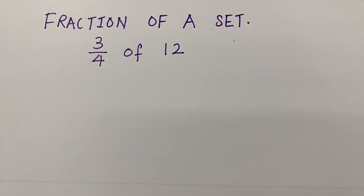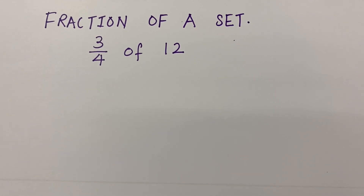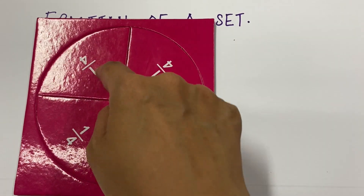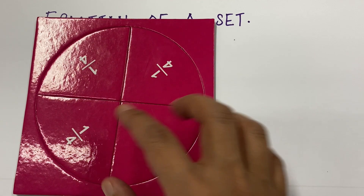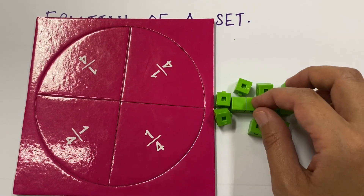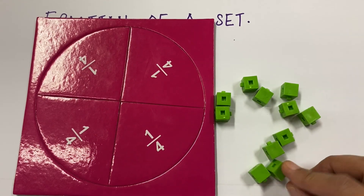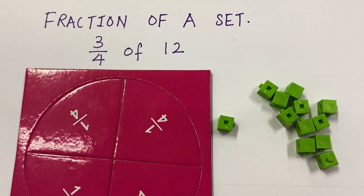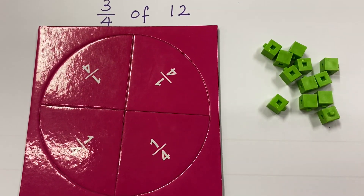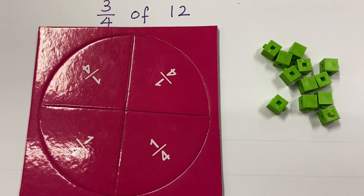Let me show you using the fraction discs first. If the question states three-quarters of 12, how do you show that? I have here my fraction discs — quarters. Quarter means there are four parts, and I have 12 cubes here.